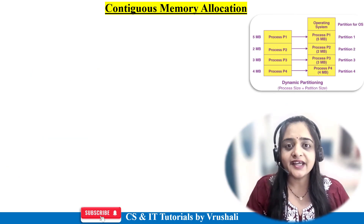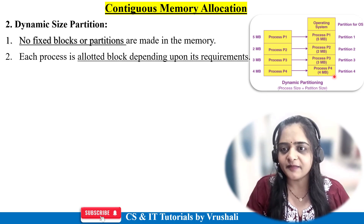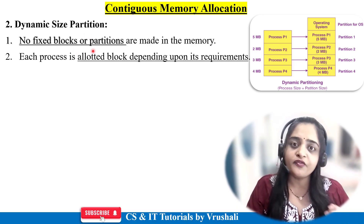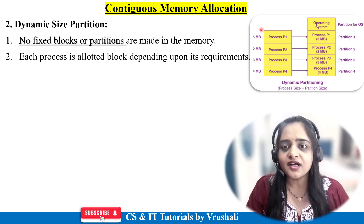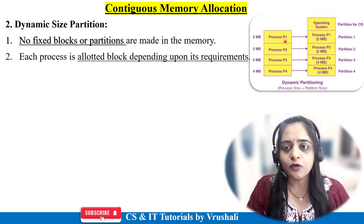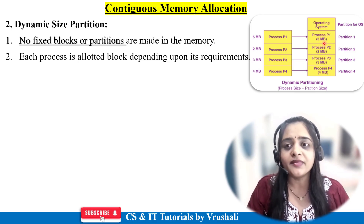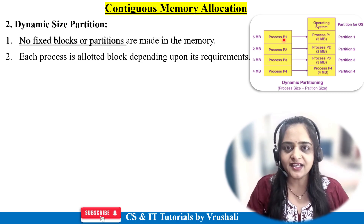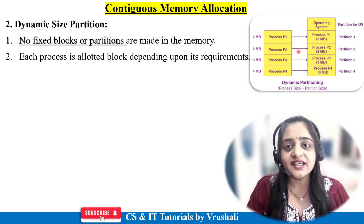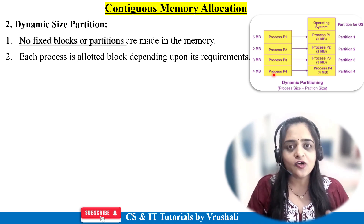In dynamic size partition, there are no fixed blocks. The operating system allocates memory as per the requirement of each process. For example, process 1 requires 5 MB, so the OS allocates exactly 5 MB. Process 2 requires 2 MB, so the OS allocates exactly 2 MB. This means there is less wastage of memory — all memory space is divided as per the requirement of the process. This is called dynamic size partition.